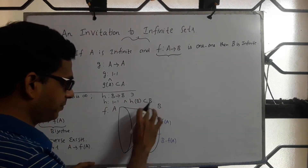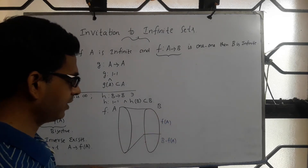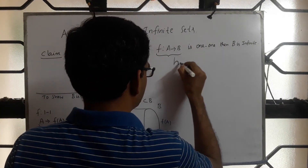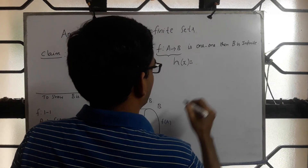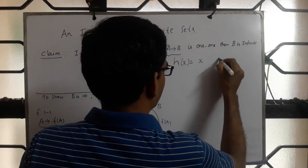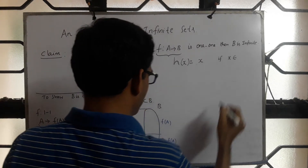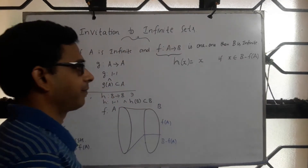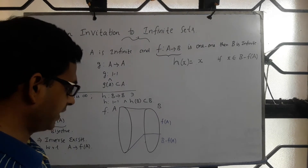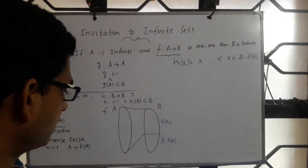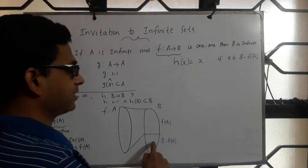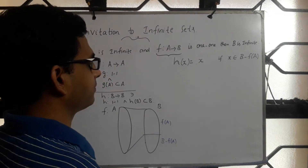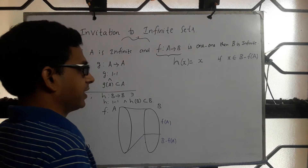Now we are going to come up with h from B to B given this picture. The function h will map x to x itself — an identity map — if x belongs to B minus f(A). So if x is coming from B minus f(A), it is mapped to B minus f(A) via the identity map.